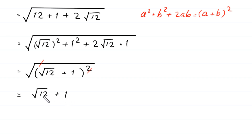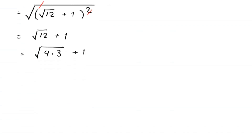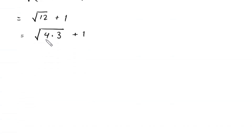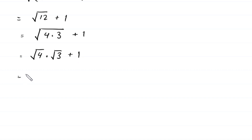Now, this square root of 12 can be simplified as square root of 4 times 3 plus 1. This square root of 4 times 3 can be written as square root of 4 times square root of 3 plus 1. Square root of 4 is 2, so the answer is 2 times square root of 3 plus 1.